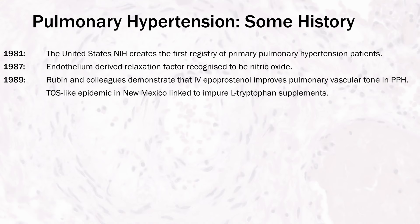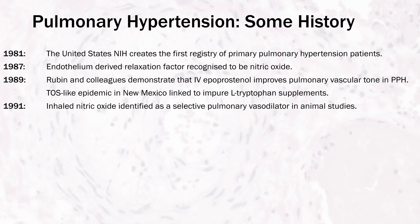By the 90s, discoveries in physiology were being applied to practice. Inhaled nitric oxide was identified as a selective pulmonary vasodilator in animal studies in 1991. In 1995, over a century after the lesions were first described, epoprostanol was approved as the first specific therapy for pulmonary arterial hypertension. Prior to this, clinicians had been struggling with nonspecific and supportive treatments including calcium channel blockers, digoxin, warfarin, diuretics, and supplemental oxygen. Epoprostanol revolutionized PAH management, improving both functional status and life expectancy, but had to be given as a continuous intravenous infusion.